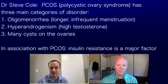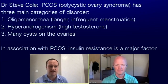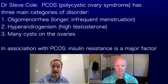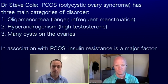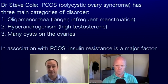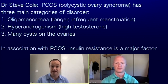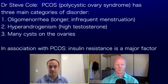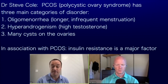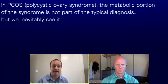Particularly in PCOS — polycystic ovary syndrome — it's a syndrome that has three main diagnostic categories: oligomenorrhea, meaning people don't have normal regular periods; hyperandrogenism, meaning clinically elevated testosterone or testosterone-like substances; and cysts on the ovary. Associations with those include insulin resistance and metabolic disease. The metabolic portion is not the actual diagnostic criteria we use, but we inevitably see it.